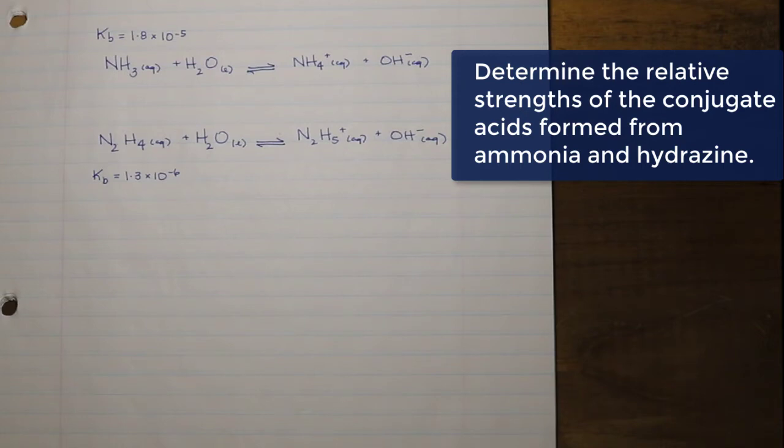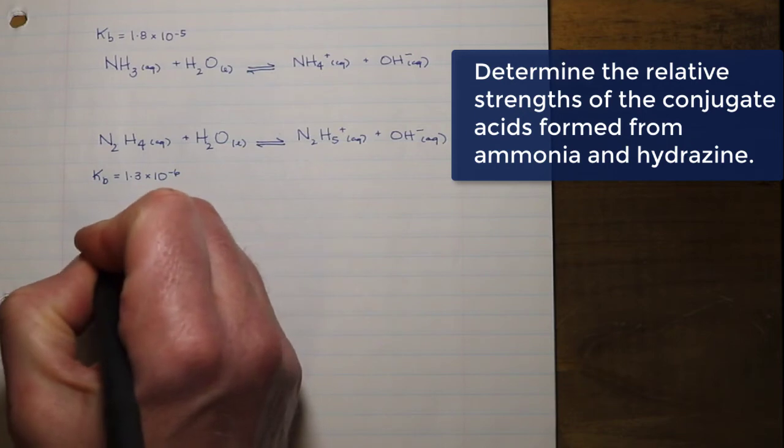We have to remember that Kw, that constant, is going to be determined or can be determined by the product of the Ka times the KB for any conjugate acid-base pair. That is, if we know the Kw and we know one of the Ka or KB's of a conjugate pair, we should be able to figure out the other variable.